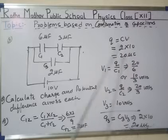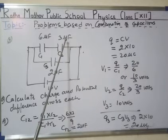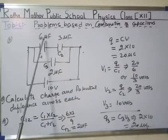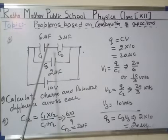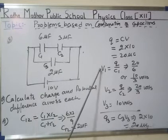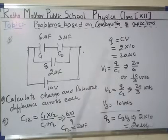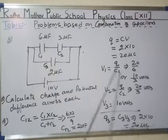Now we have to find the potential drop across each capacitor. So across c1, v equals q/c. q is 20 microcoulomb and c is 6 microfarad, so v1 equals 10/3 volts.